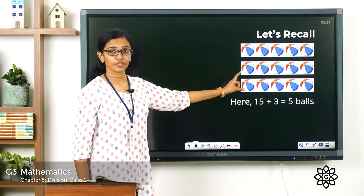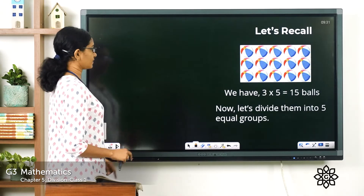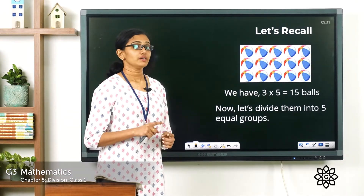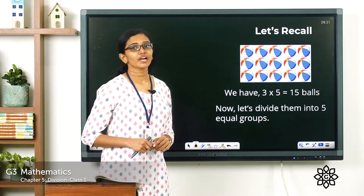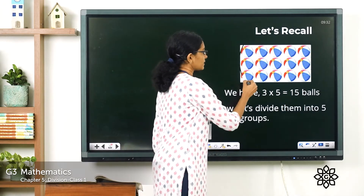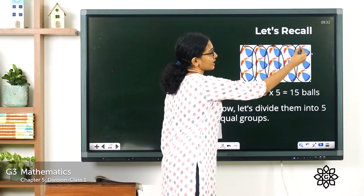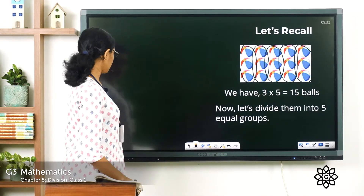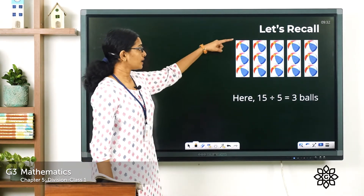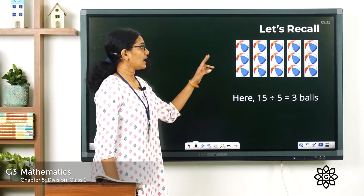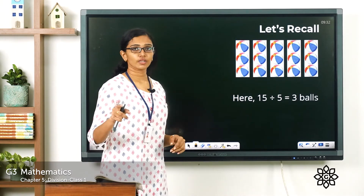So we have divided the 15 balls into 3 equal groups of 5 each. Now let's try dividing them into 5 equal groups. We have divided the 15 balls into 5 equal groups, and in each group there are 3 balls each. So this is 15 divided by 5 is equal to 3.